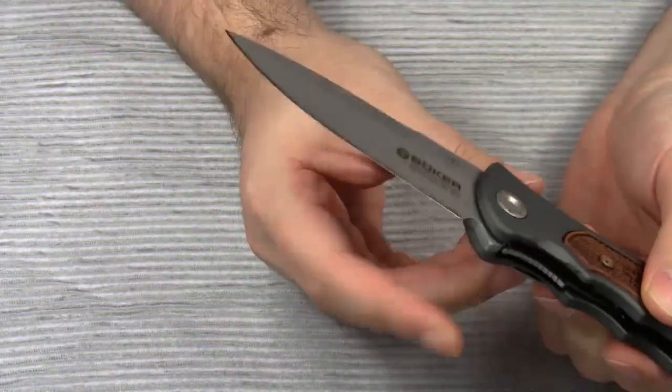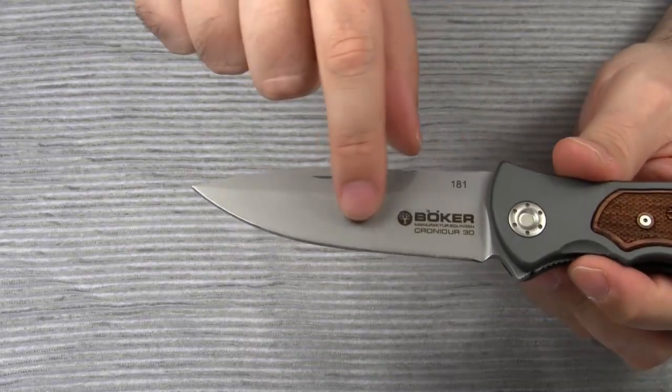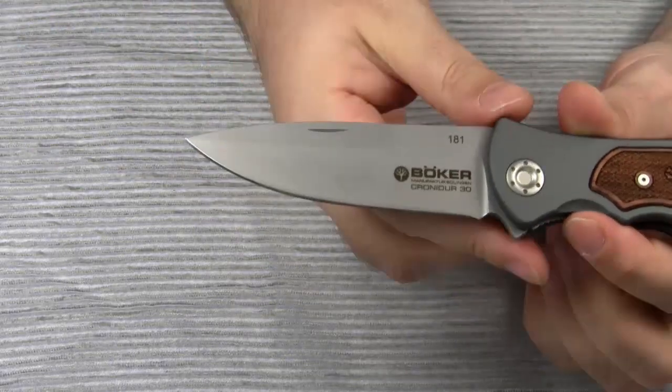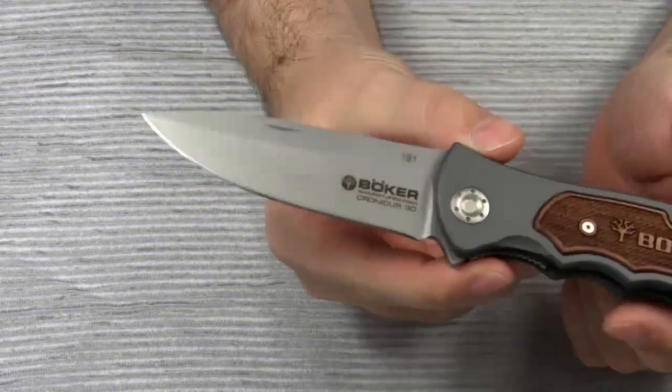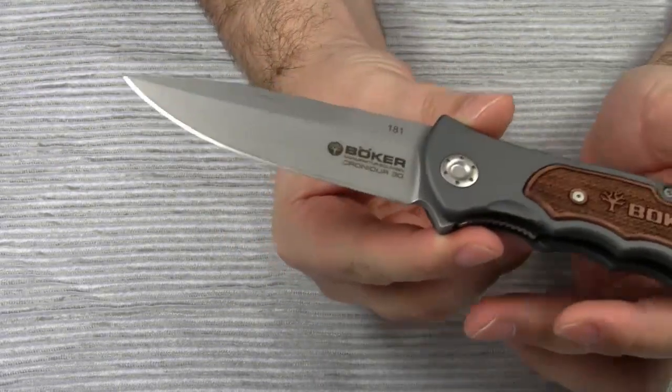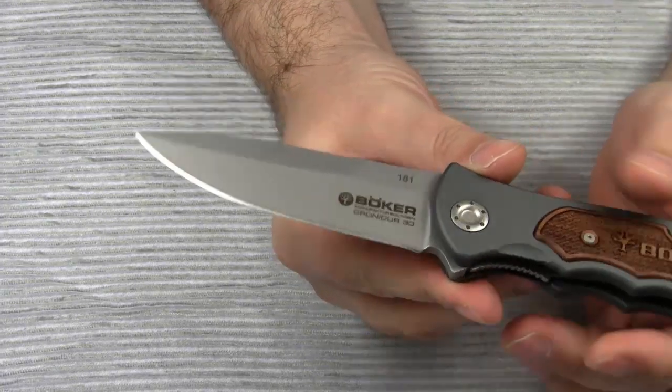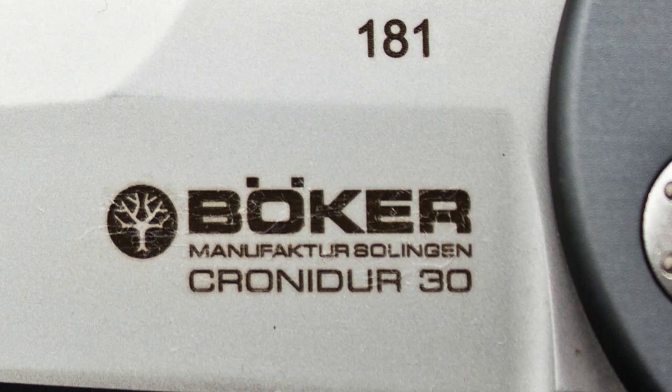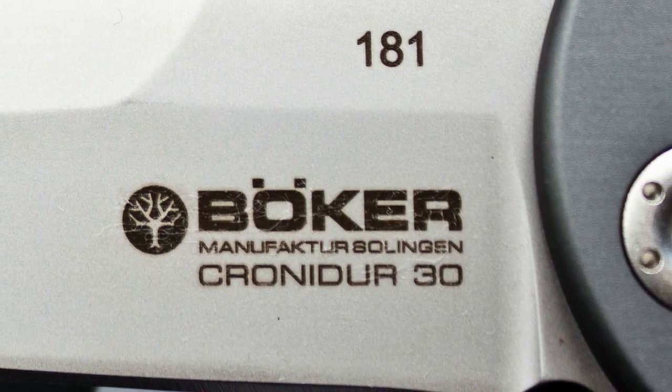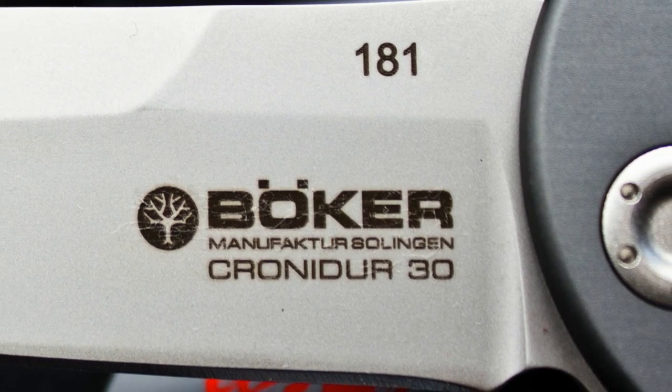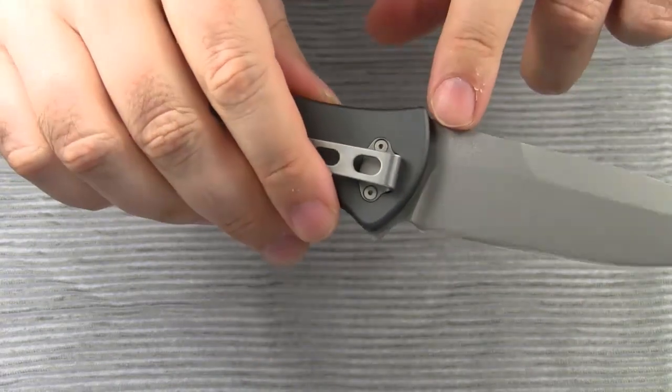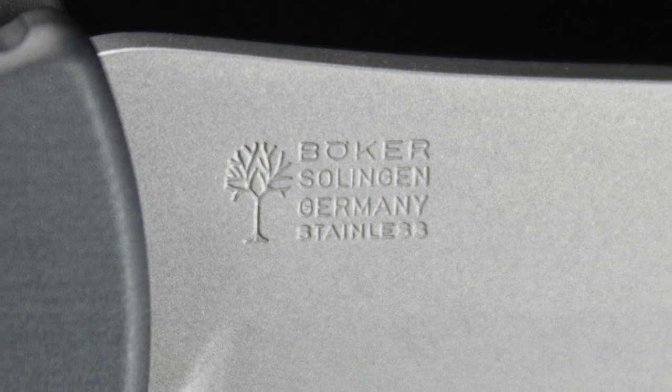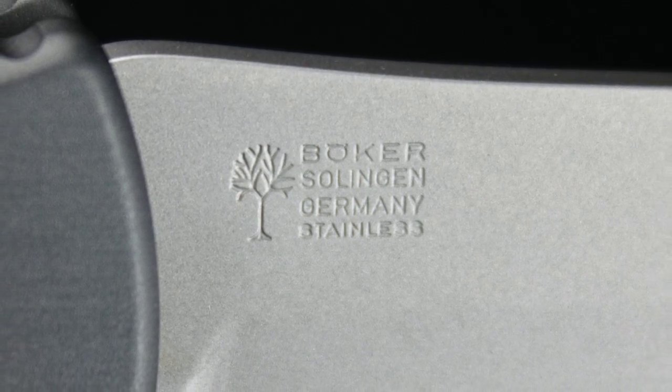Like I already mentioned, the grind starts below this line. The blade is flat ground. And with a large blade like this, I can't imagine any cutting task this knife would not be capable of. So, here you can see the Boker logo and the steel name Cronidor 30. On the other side of the blade is a very subtle stamp that says Boker Solingen Germany Stainless.